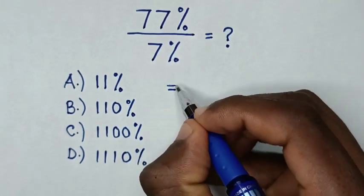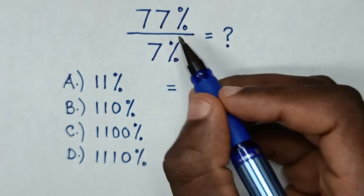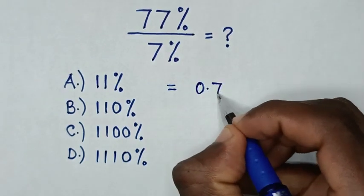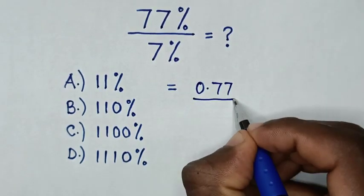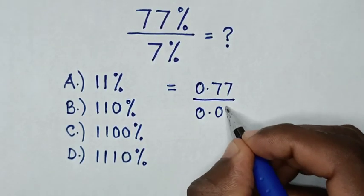Then it will be equal to 77% in 77 divided by 100 is 0.77. Then over, from 7%, 7 divided by 100 is 0.07.